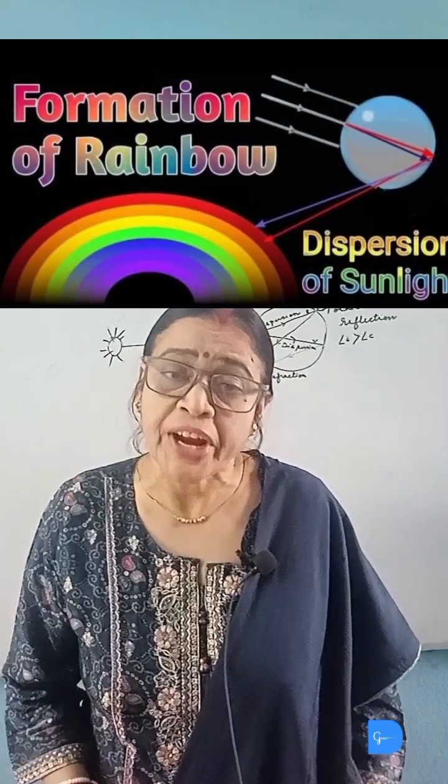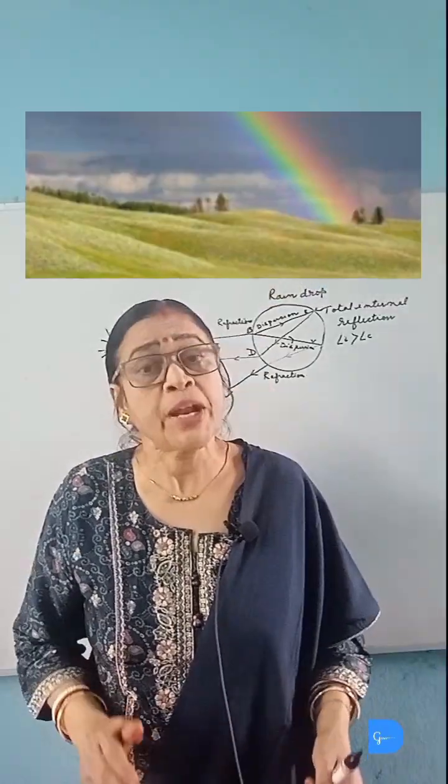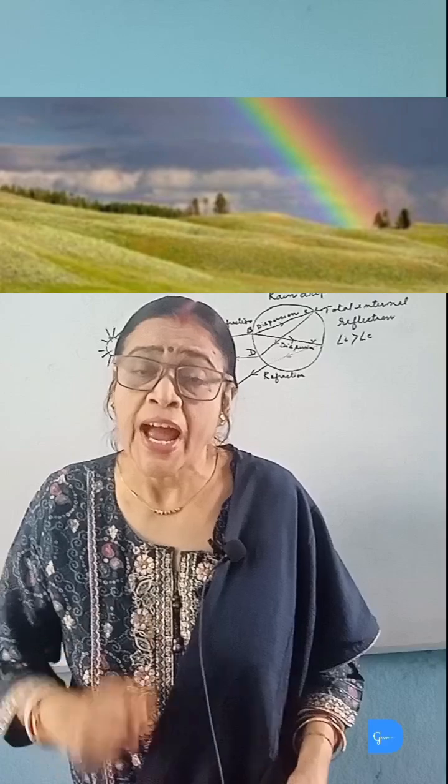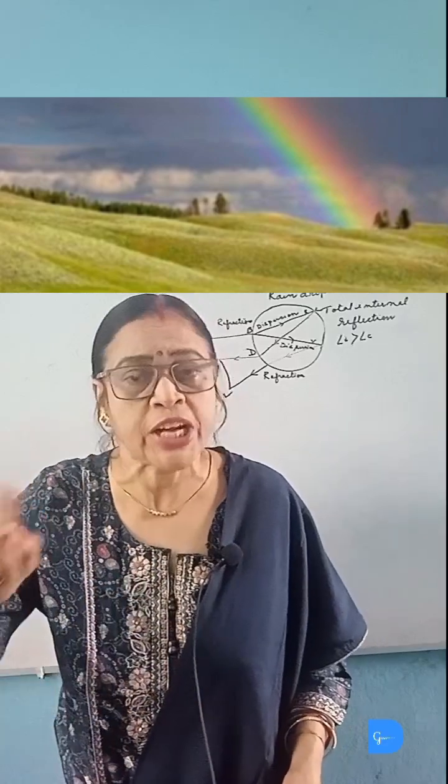Describe briefly the formation of rainbow in the sky. Rainbow can be seen during rainfall and in a direction opposite to that of the sun.